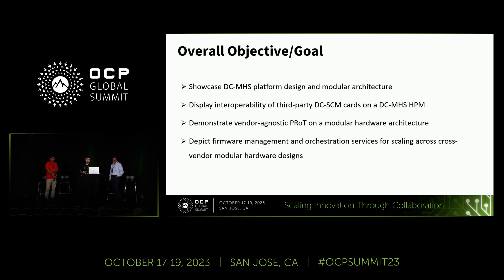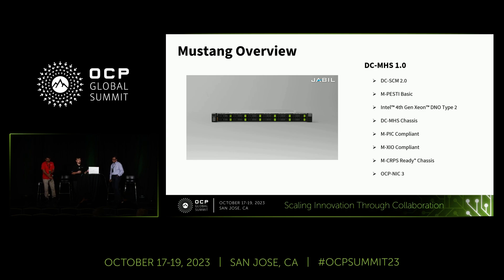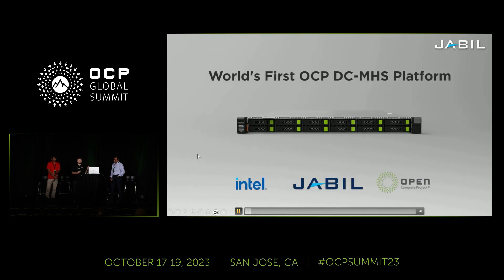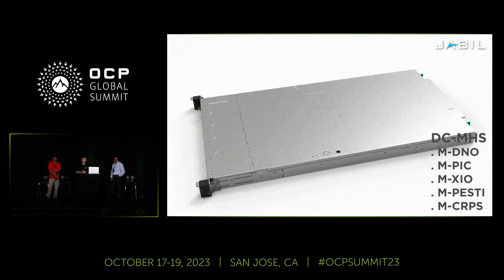Dwarka will cover the specific ASPEED DCSCM solution and reference design. As a quick overview, the chassis we used to perform this test was Jabil's Mustang platform, announced last year at the OCP Summit. This solution was quickly used to bring in a different DCSCM 2.0 card while the remainder of the components remained the same. This short video will cover all the different components of the platform and what DCMHS provides.